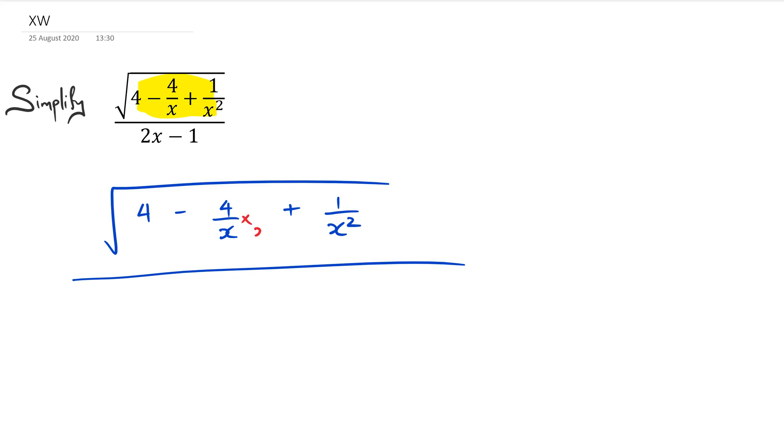I'm going to multiply the denominator here by x, and the denominator here by x², because remember 4 has a 1 below it, so I've got to multiply by x².